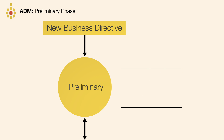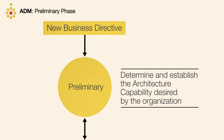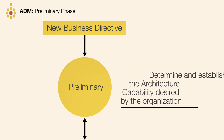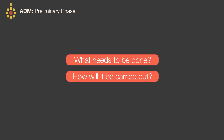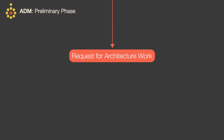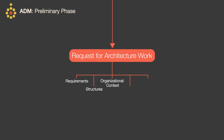The main objectives of the preliminary phase are to determine and establish the architecture capability desired by the organisation. A key part of this is to define what needs to be done and how it will be carried out. For example, the main output is a request for architecture work that outlines requirements and the organisational context, structures, and tools or architecture frameworks that are needed to support this work.